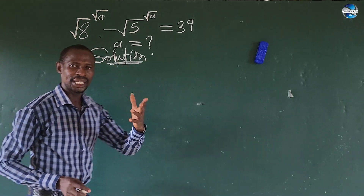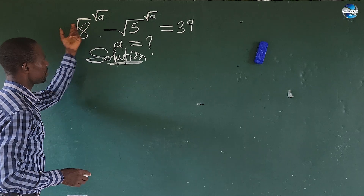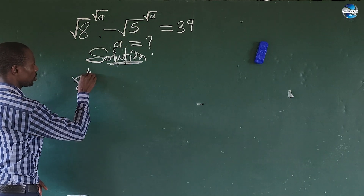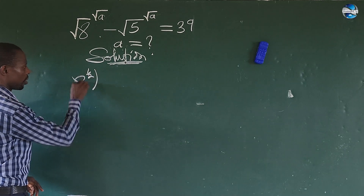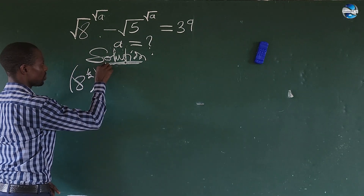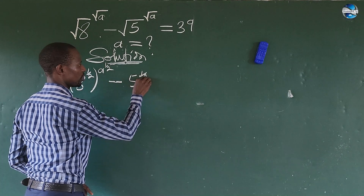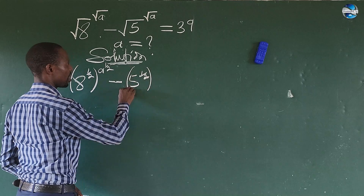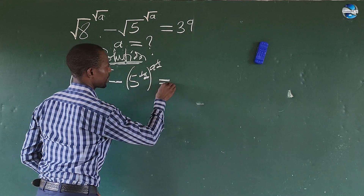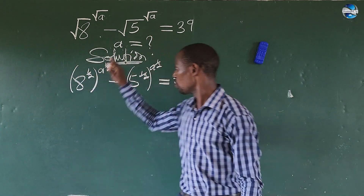What I am going to do here is to rewrite this expression. I want to remove this radical. So we are going to have here A to the power of 1 over 2, raised to the power of A again to the power of 1 over 2, minus 5 to the power of 1 over 2, raised to the power of A to the power of 1 over 2, everything equal to 39. This is the expression we have here — the same thing we have above.